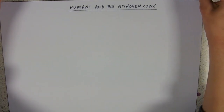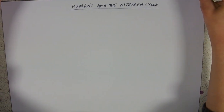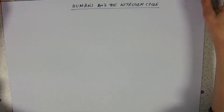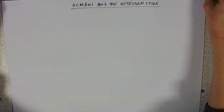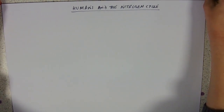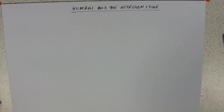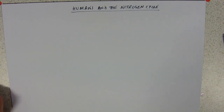This is the very last bit of the populations part of component one, and this bit looks at humans and their impact on the nitrogen cycle.